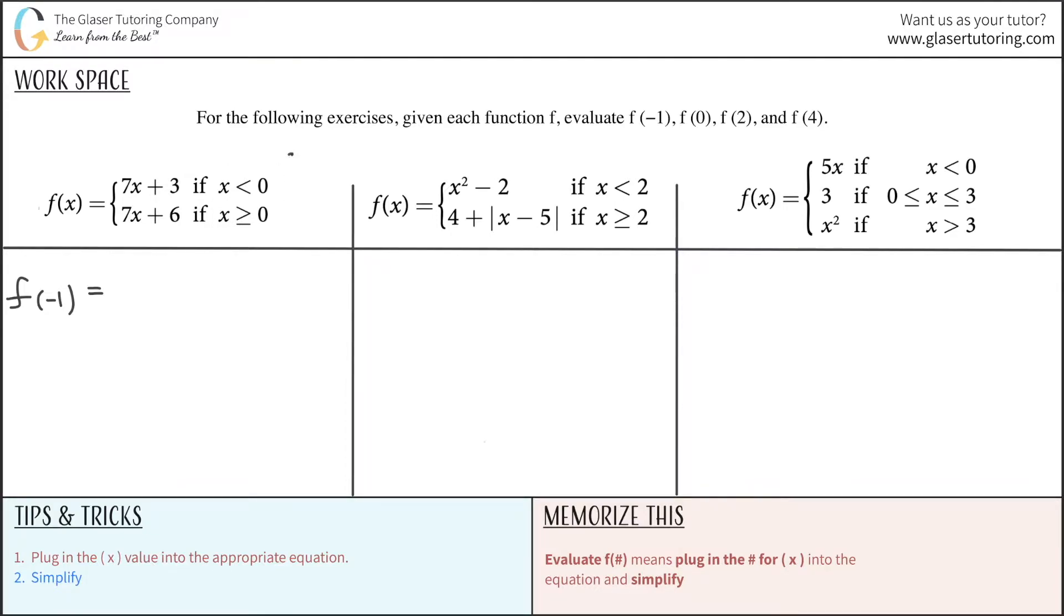Negative 1 is going to be less than 0, so negative 1 falls under this constraint, and therefore I use this equation. So now I'm going to write out that equation, so 7x plus 3. But remember, we're going to take this x value and just throw it on in for x. So instead of writing x there, I'm going to write negative 1 plus 3. Now all I'm going to do is simplify. This is negative 7 plus 3 is going to be a positive 4.